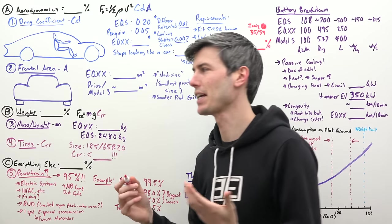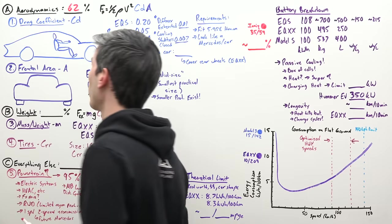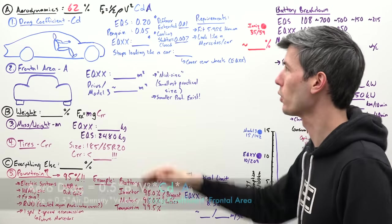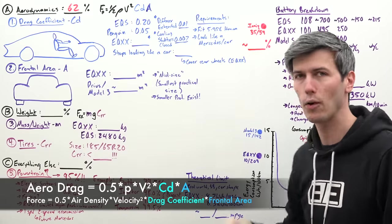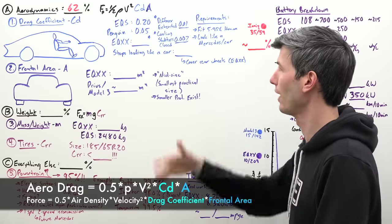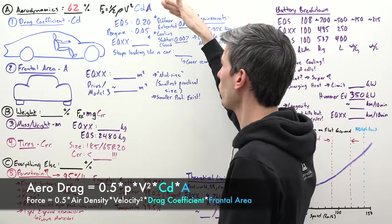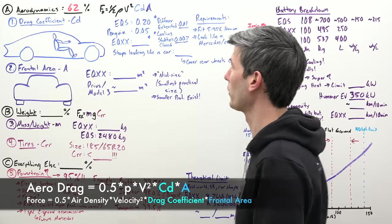For the speeds Mercedes is targeting, aerodynamics makes up 62% of overall energy consumed. If you look at the equation for aerodynamic drag, you can look at what variables you can mess around with to improve aerodynamics. There's only two you can really control from a design standpoint: your drag coefficient and the frontal area.